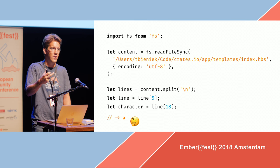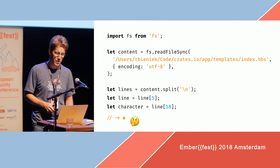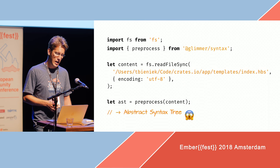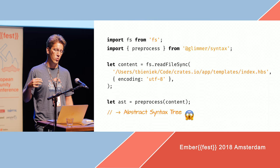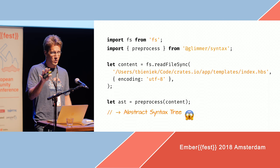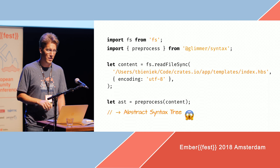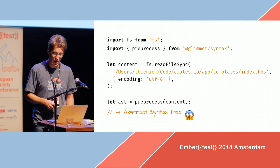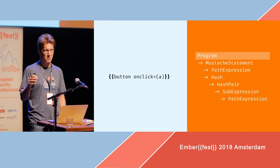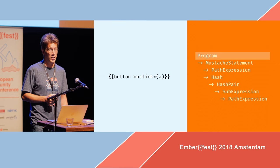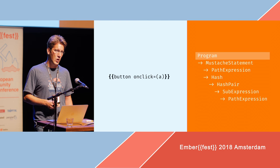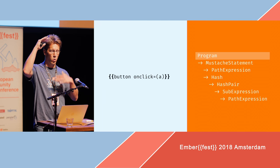But that doesn't really help us, because we want to know what that thing is — it could be an A in an HTML tag, for example. So what we can do instead is use the @glimmer/syntax package. We pass the code from the file into the preprocess function that package provides, and that produces an abstract syntax tree — an AST. The next talk will also give you an introduction to that. So the AST roughly looks like this.